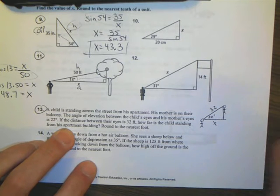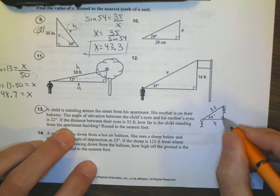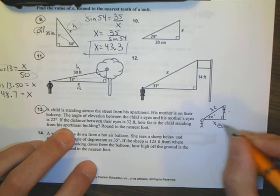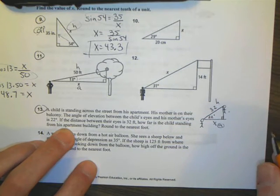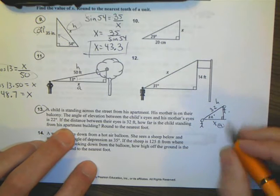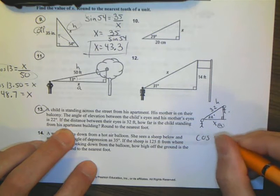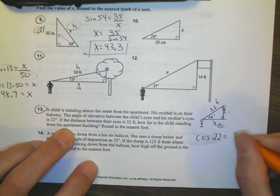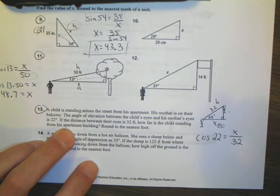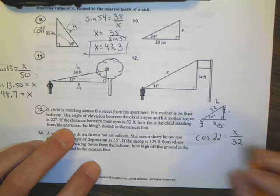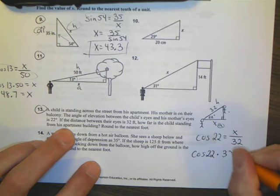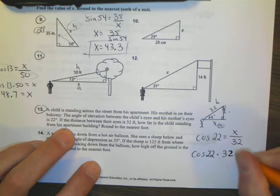Here's my setup. I have an angle. I have a right angle here. I don't know the opposite. I want to find out the adjacent, and I have a hypotenuse. So I have an A and an H, which tells me, again, cosine of the angle, 22 degrees, is equal to the adjacent over the hypotenuse, 32. So to solve this, cross-multiply. Cosine of 22 times 32 will equal X.